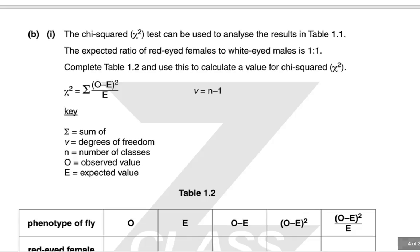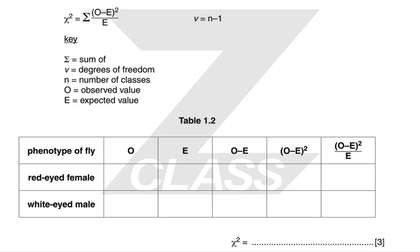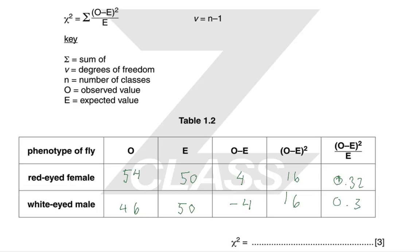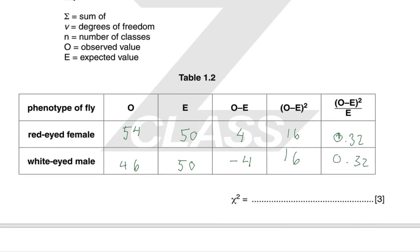The chi-squared test can be used to analyze the results. The expected ratio of red-eyed females to white-eyed males is 1:1, so the expected number is 50 each. The observed values are 54 red-eyed females and 46 white-eyed males. Observed minus expected is 4 and negative 4. Squaring gives 16 each, dividing by the expected gives 0.32 each, and summing gives a chi-squared value of 0.64.